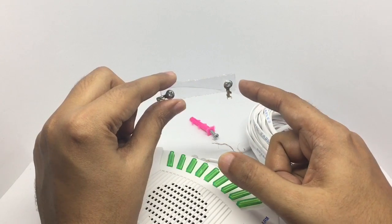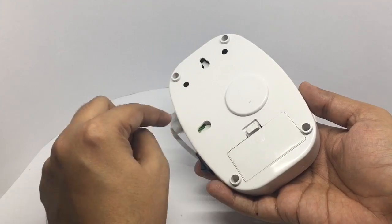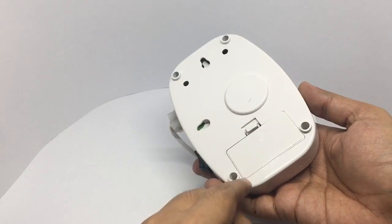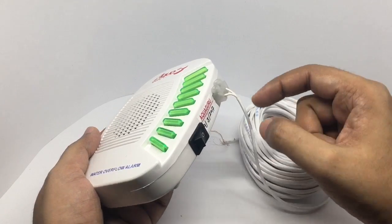They even give you a screw to hang it on this hole or on this hole. It works with two double-A batteries. That's where the wire goes, and then there's a switch to turn it on and off.